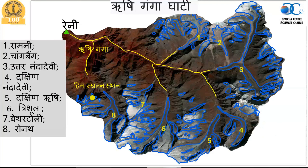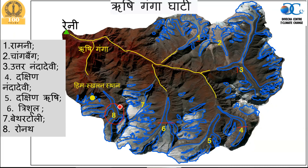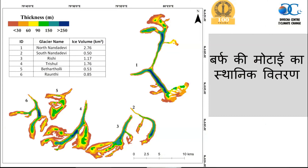Let us look into the Rishi Ganga Valley, the region where the Uttarakhand flash flood originated. In the Rishi Ganga basin there are numerous glaciers — Ramni glacier, Nanda Devi glacier, South Nanda Devi glacier, Trishul glacier (near the famous Trishul peak). This particular event happened around the Ronti glacier, and the flash flood moved down along the Rishi Ganga river, eventually merging into the Dhauliganga river basin.